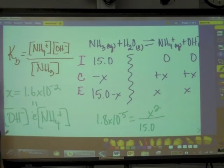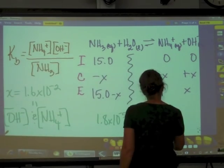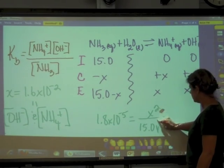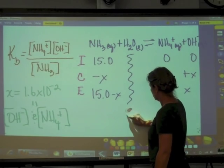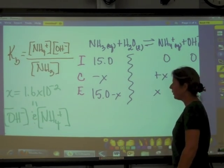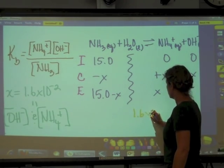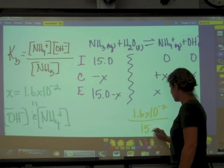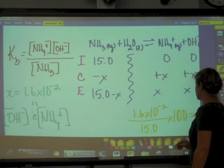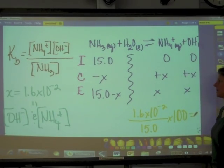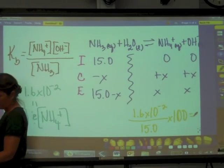And so this number is going to get us there knowing that this number represents the hydroxide ion concentration. Now, really quickly so that we're sure that we did okay by calling that negligible, we need to do a little percent dissociation here. And so we are going to take the part that has dissociated, 1.6 times 10 to the minus second, over the whole, which is 15.0 molar, times 100. That is going to give us our percent dissociation and as long as that number is less than 5%, then we were okay to throw out that minus X.